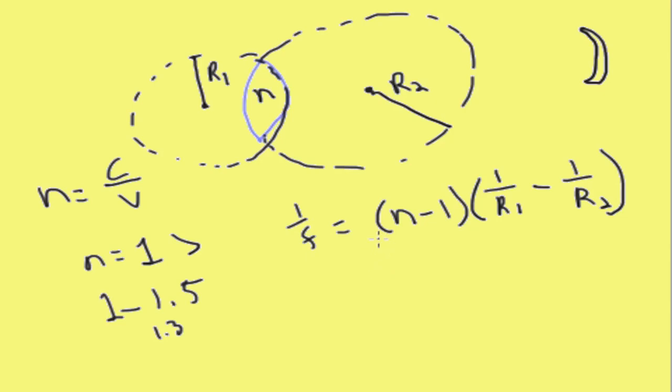So the way that you read this equation is that the index of refraction and the radii of curvature set what the focal length will be.